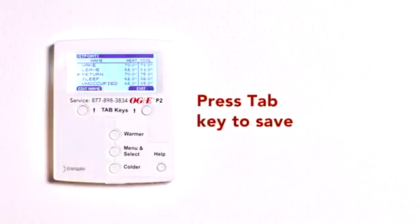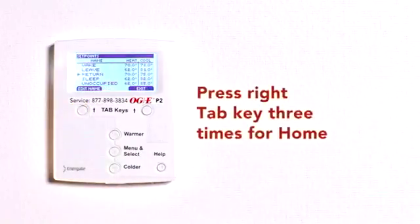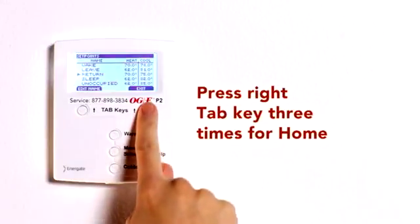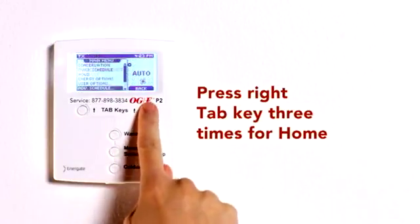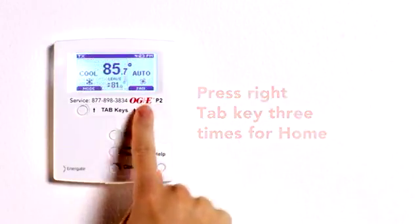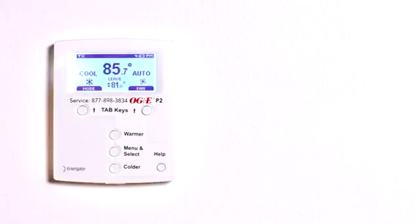Once you have made and saved all your changes for the set points, press the right tab key three times to return to the home screen, or in a few seconds it will return automatically.